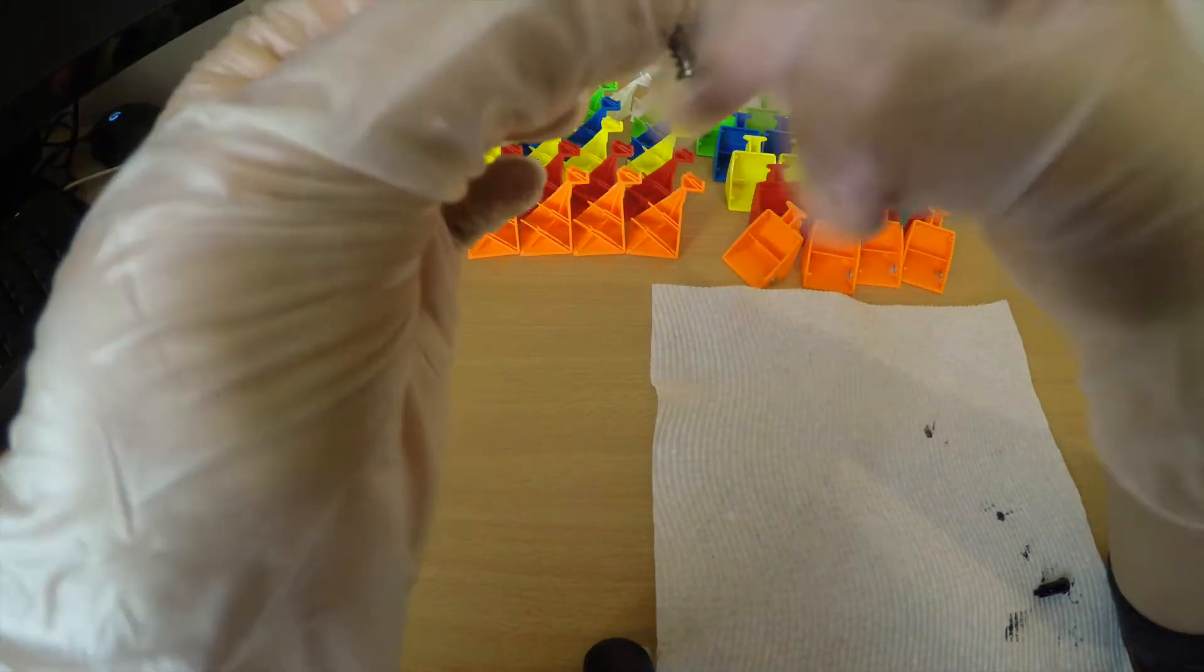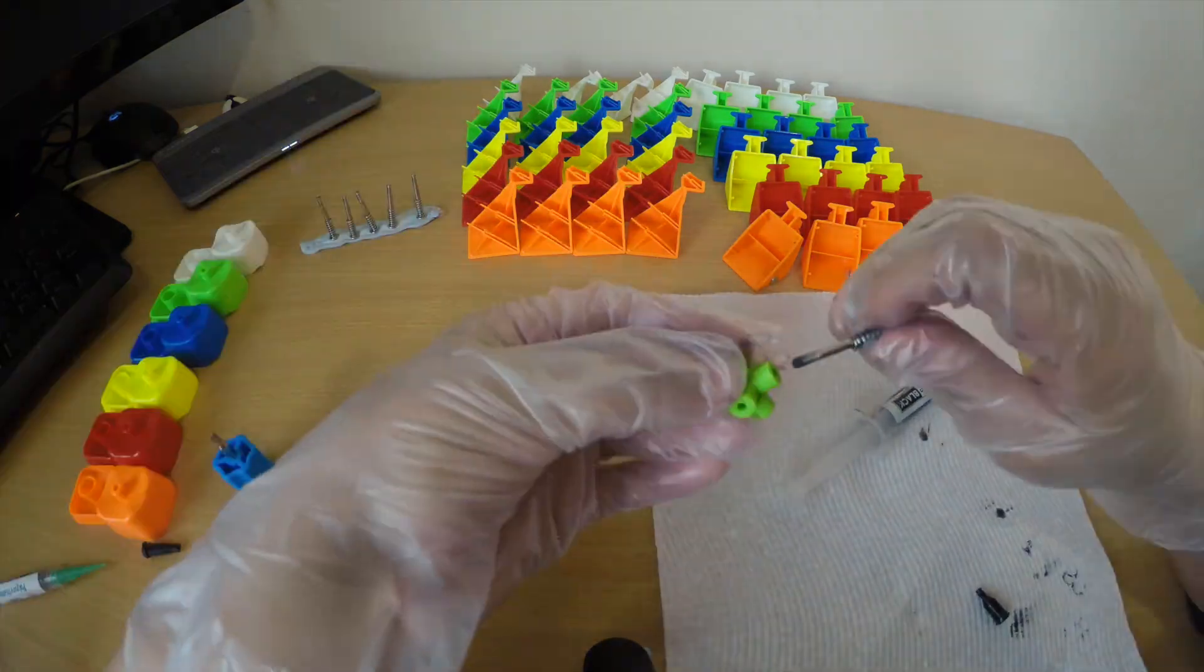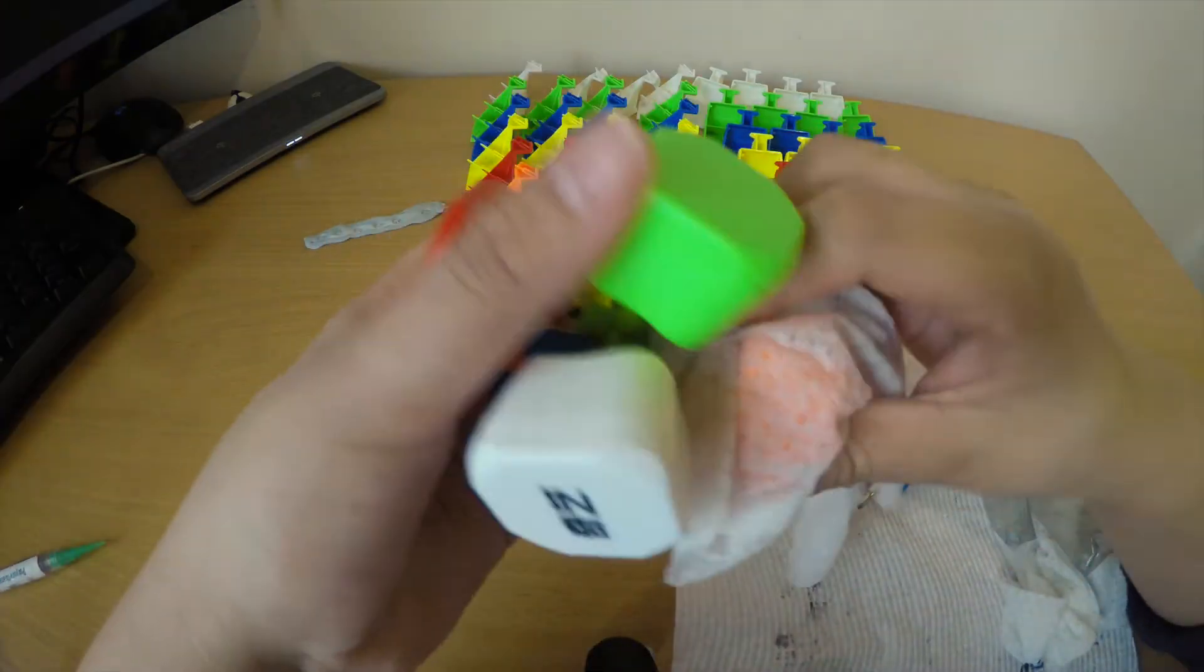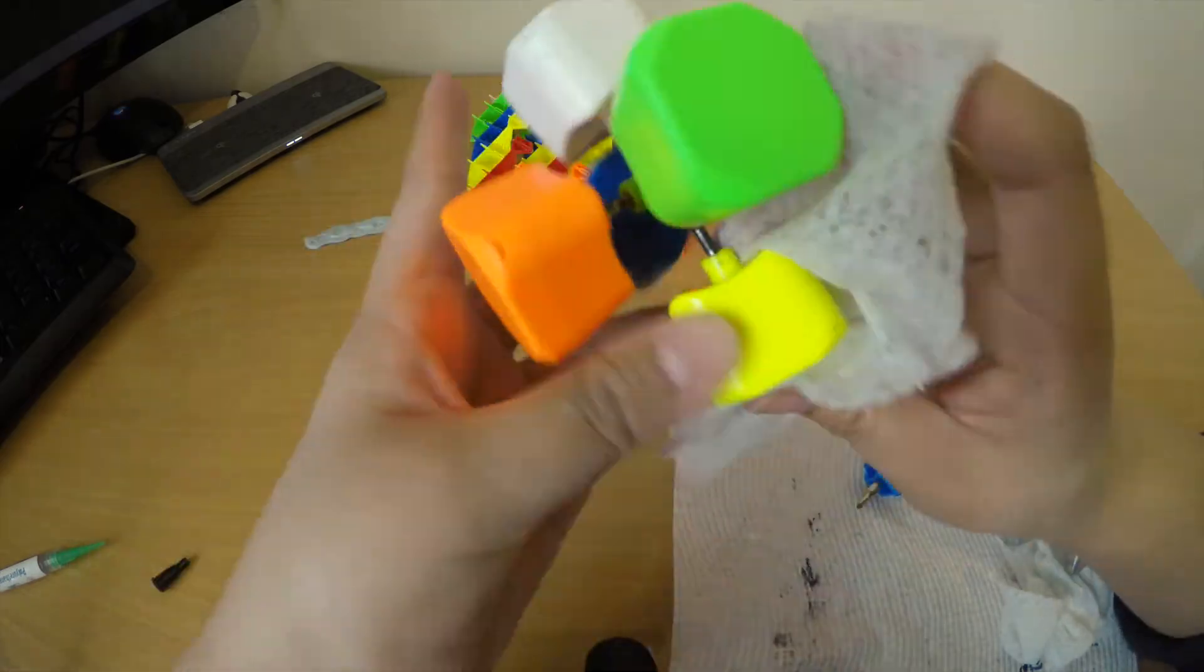While that's curing I'm going to lube my core with some lubical black and screw each of the center pieces back into the core and then wipe it down because it gets very messy.